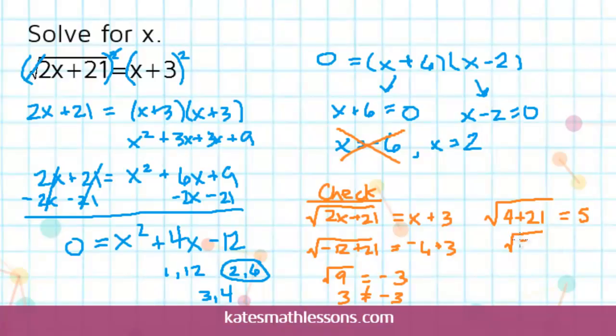4 plus 21 is 25, and the square root of 25 is 5. So in this case, they did both come out to the same number on both sides. So that means that our one answer for this equation is x equals 2.